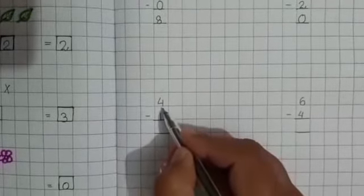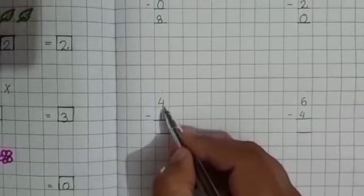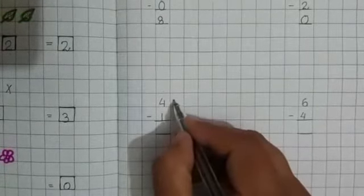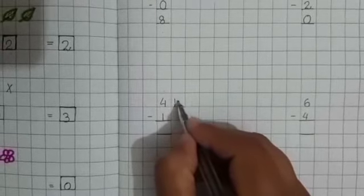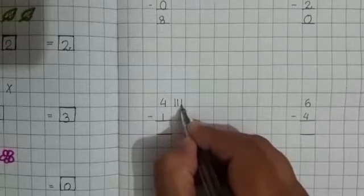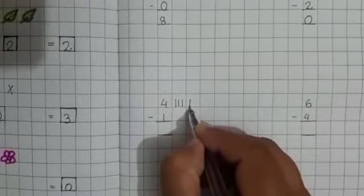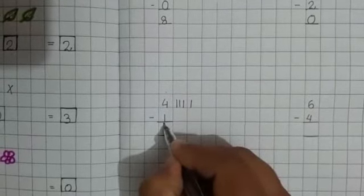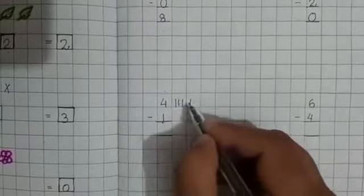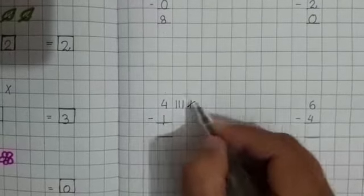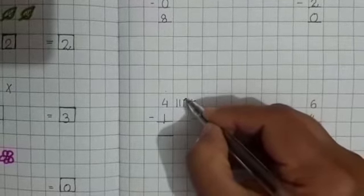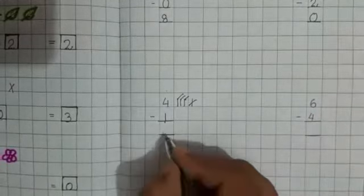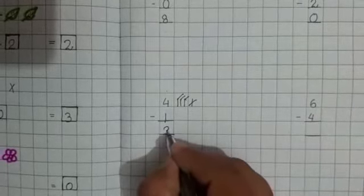Here on the top, first digit is 4. First one I have written 4. How many lines you have to draw? Yes. Draw 1, 2, 3, 4. Out of 4 how many you have to take? Yes. How many do you have to take out? That is 1. Only 1 you have to strike. How many are left? Yes. Count it. 1, 2, 3. Very good. So answer is 3.